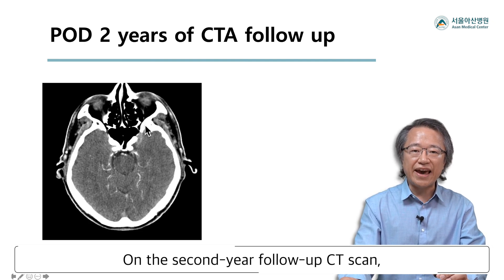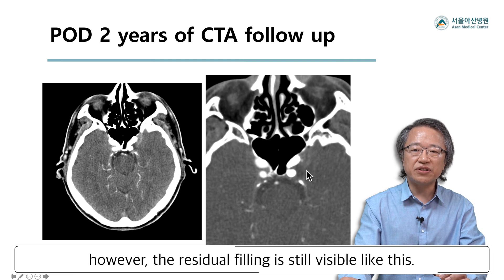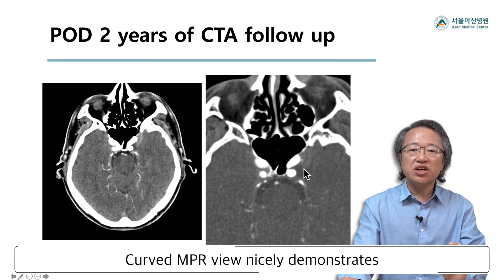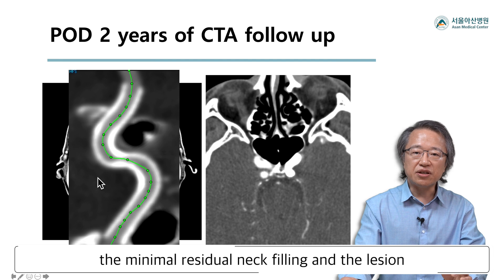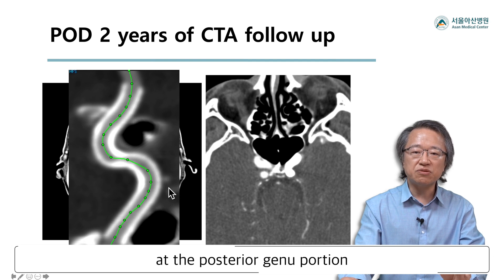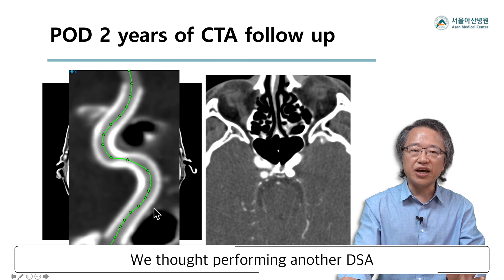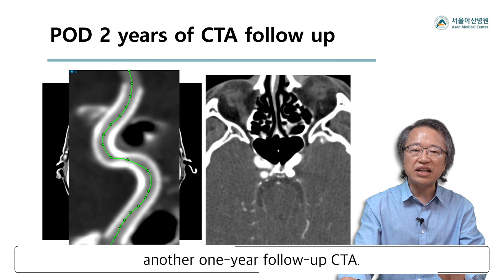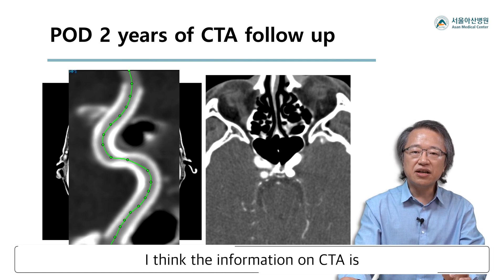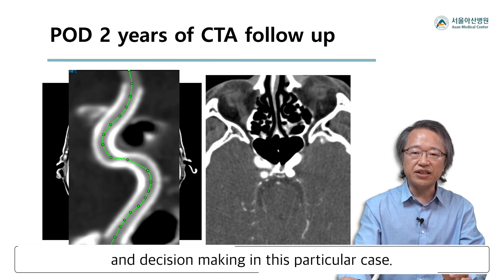On the second-year follow-up CT scan, the aneurysm itself is contracting more. When you look into the source images closely, however, the persistent filling is still visible. Curved MPR views demonstrate good parent artery patency and show the minimal residual neck filling and the lesion caused by poor wall apposition at the posterior genu portion of the cavernous segment of the ICA. We thought performing another DSA would not provide further additional information at this point, so we decided to put the patient on another one-year follow-up CTA. The information on CTA is enough for treatment outcome evaluation and decision-making in this particular case.